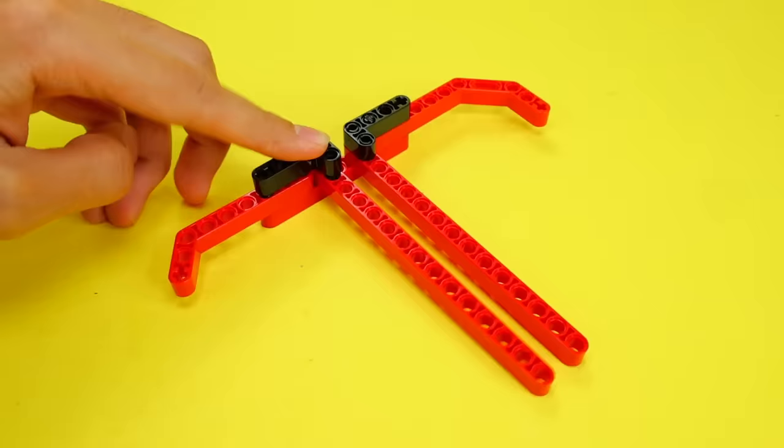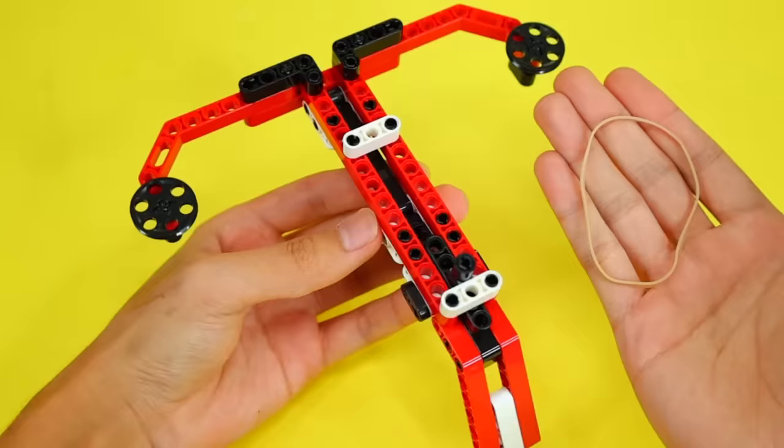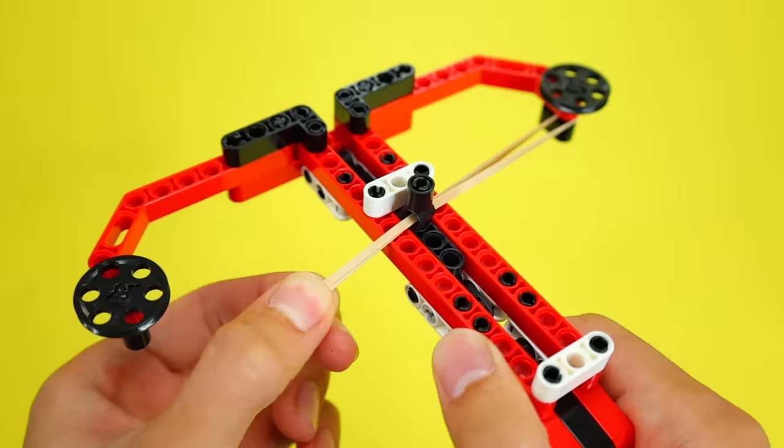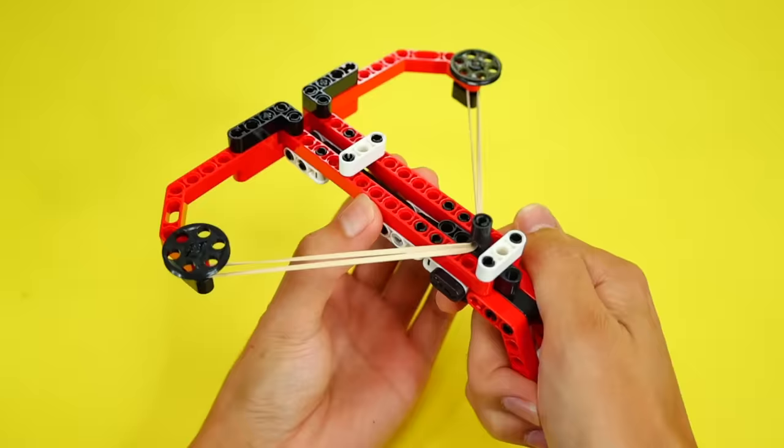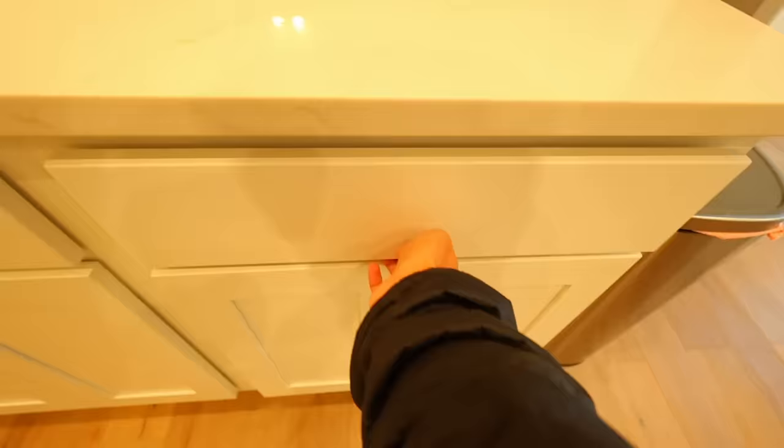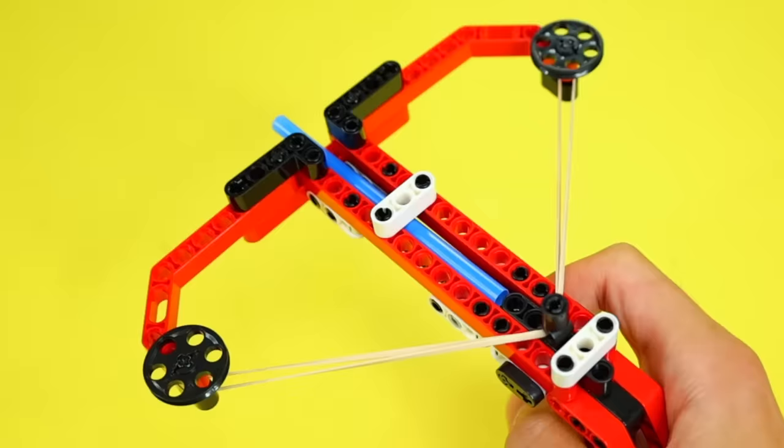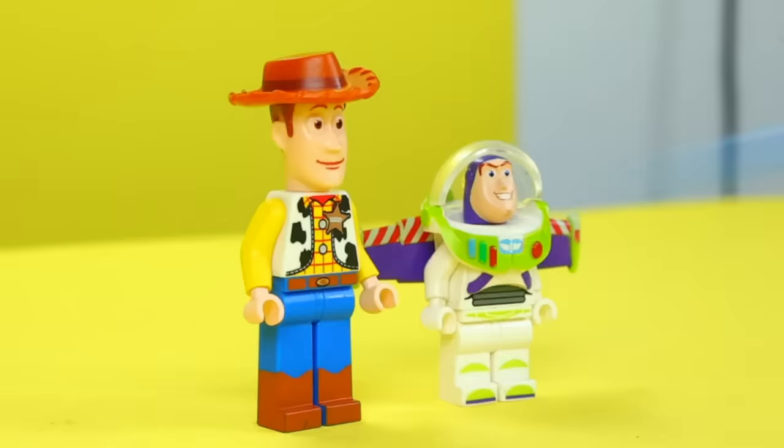This first weapon we're gonna look at is a DIY LEGO crossbow. I'm gonna use a rubber band to add a working spring mechanism that can shoot with the pull of this trigger. And for the arrows, I'm gonna use a straw, which is hollow inside, so it should be able to fly through the air really fast.